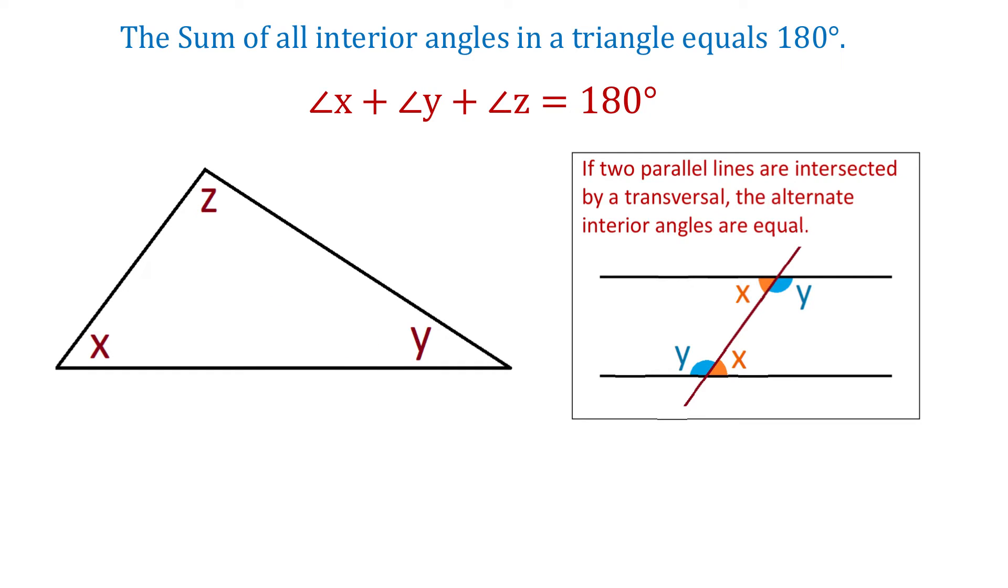To show that the sum of these three angles equals 180 degrees, through this vertex we will draw a line that is parallel to the opposite side. So, here we have the line that is parallel to this side,